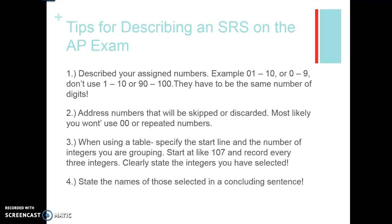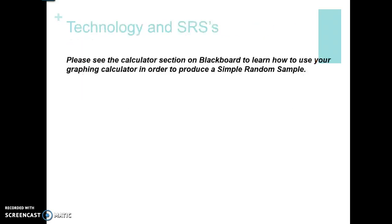Finally, make sure you state the names of those selected. Even though you said we were choosing person 101, 125, 135, you want to state who they were — Susie, Johnny, and Bill. Just make sure that you include that as part of your description.